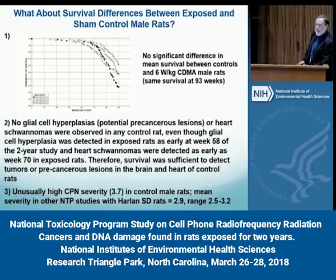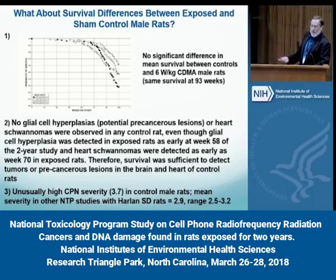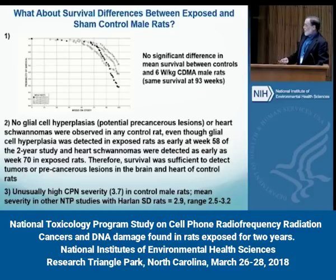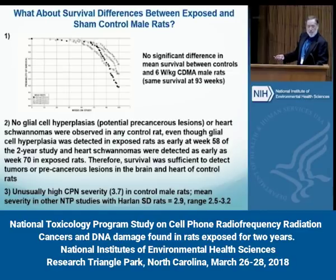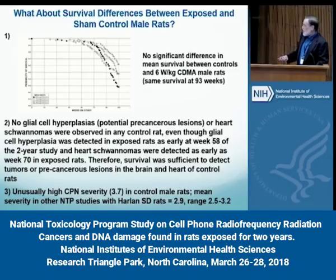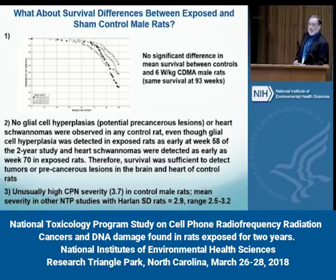There's some explanation that there was a reduction in chronic progressive nephropathy. When you look at the CPN severity score of 3.7, it's extremely high. In the 1990s, CPN severity was a cause of death that led NTP to switch their diets from NIH-07 to NTP-2000 to reduce protein. This kind of score is much higher than was observed during the 1990s and is a score you would find for a renal toxicant — and that's what is reported in the controls. Why it's so high, I don't have an explanation.